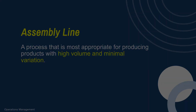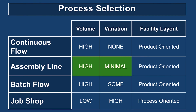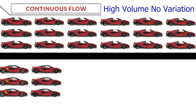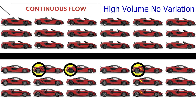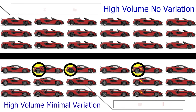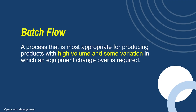Next, we have assembly line. This too is high-volume production, but instead of no variation there's minimal or little variation. Again, if we're producing the exact same car, that's continuous flow — but if we're producing the same car with slight modifications because of an upgraded model, premium features on the sound system, or something of that nature, that would still be assembly line, not continuous flow, because of those slight variations that have to take place.